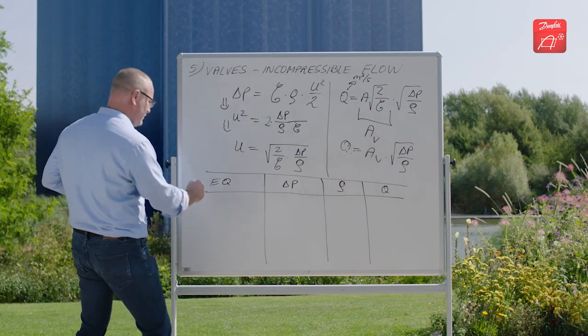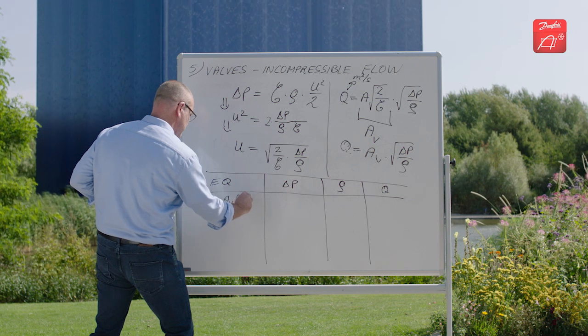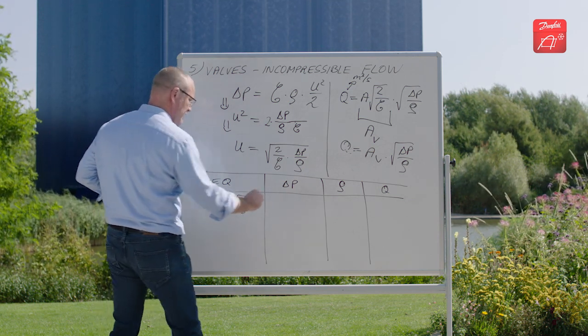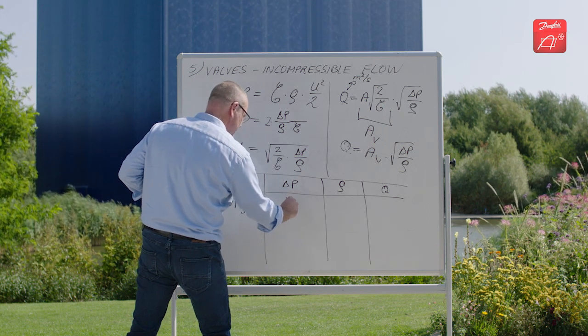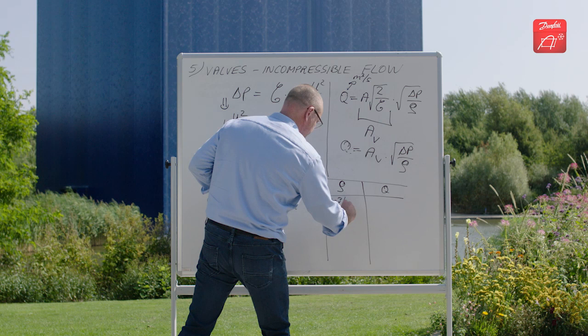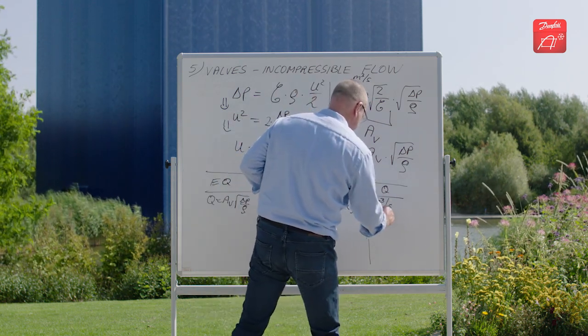So the first one is this equation: delta P in Pascals, density in kilograms per cubic meter, and the flow in cubic meters per second.